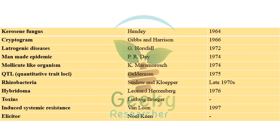Van der Plank coined 'disease triangle,' 'simple and compound interest disease,' 'vertifolia effect,' and 'lenducity.' 'Kerosene fungus' by Hendy in 1964. 'Cryptogram' by Gibson and Harrison in 1966.